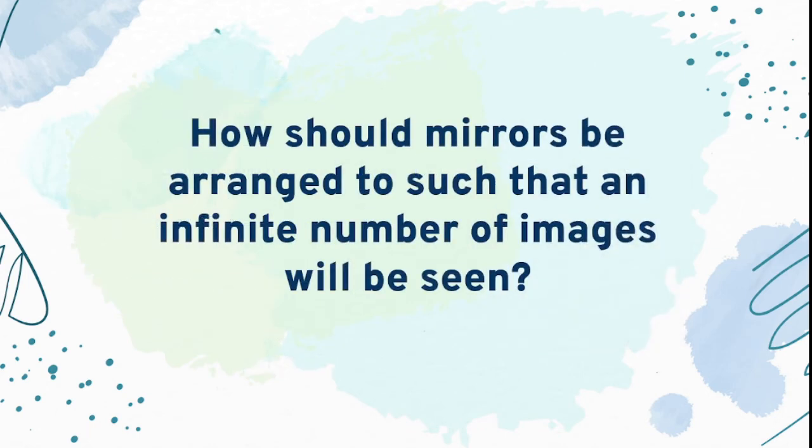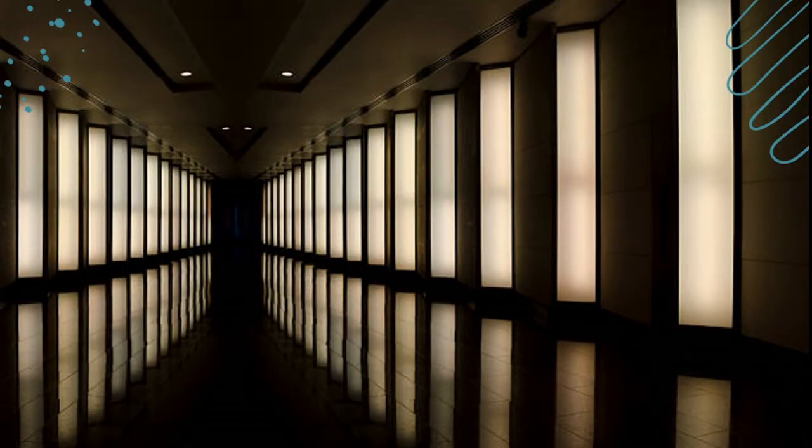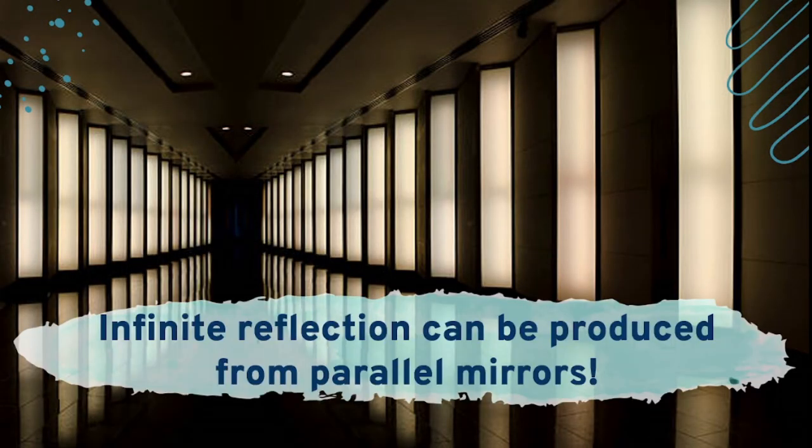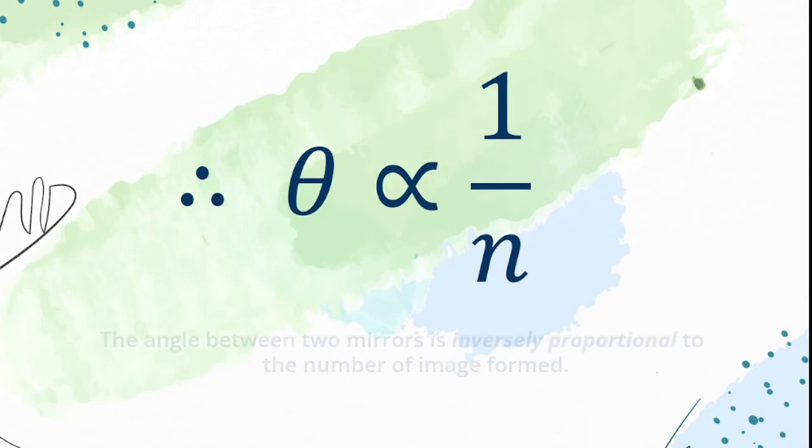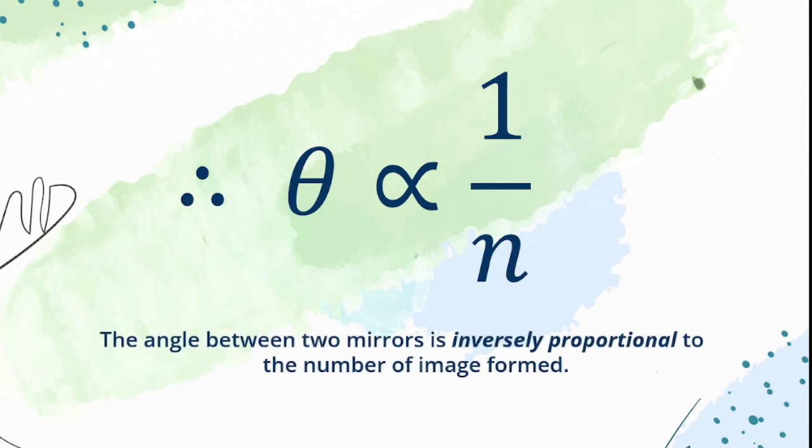How should mirrors be arranged such that an infinite number of images will be seen? You're right, infinite reflection can be produced from parallel mirrors. With this, we can say that the bigger the angle, the lesser the number of images are formed, and the smaller the angle, the greater the number of images are formed. We therefore conclude that the angle between two mirrors is inversely proportional to the number of images formed.